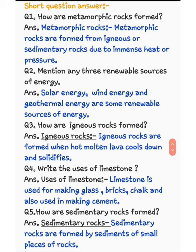Question number 3: how are igneous rocks formed? Igneous rocks कैसे बनते हैं? Igneous rocks are formed when hot molten lava cools down and solidifies. जब hot molten lava ठंडा हो जाता है और solidify हो जाता है तब igneous rocks की formation होती है।